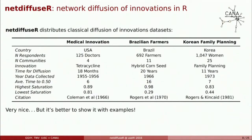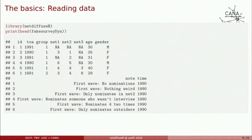Now let's see some examples. One of the key things of NetDiffuser is that it's user-friendly. We spent a lot of time working on functions to read survey data. Besides reading adjacency matrices and edge lists, you can read survey data like this — a dynamic dataset where you have times of adoption of a particular behavior, some grouping variable, and network nominations. For example, you could ask each person to name their three closest friends, and you have some other covariates in the data.